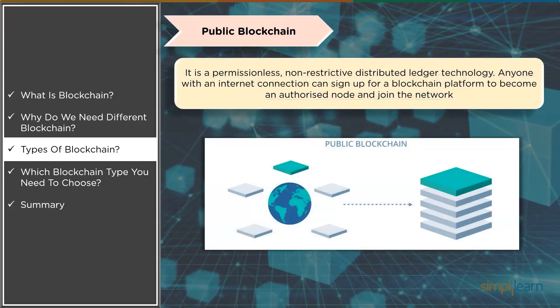A public blockchain is a permissionless distributed ledger that anybody can join and conduct transactions on. It is a non-restrictive form of the ledger in which each peer has a copy. Anyone with an internet connection can access the public blockchain, with access to historical and contemporary records as well as the ability to perform mining operations — sophisticated calculations required to verify transactions and add them to the ledger. No valid record or transaction may be modified, and because the source code is usually open source, anybody can verify transactions, uncover errors, and often fix them.